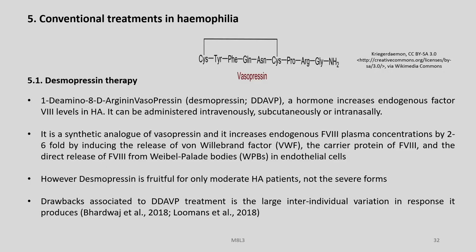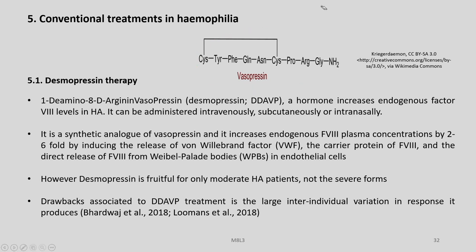What are the available conventional treatments in Haemophilia? There is a treatment called Desmopressin Therapy. First, we have a look at this molecule called Vasopressin — 1-D-Amino-8-D-Arginine Vasopressin, also called Desmopressin or DDAVP. It is a hormone that increases endogenous factor 8 levels in Haemophilia A. It can be administered intravenously, subcutaneously, or intra-nasally.